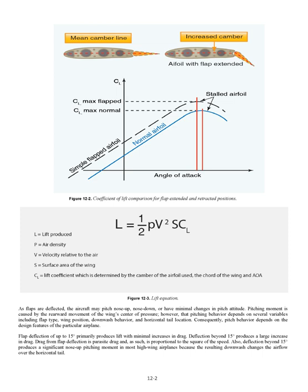Flap deflection of up to 15 degrees primarily produces lift with minimal increases in drag. Deflection beyond 15 degrees produces a large increase in drag. Drag from flap deflection is parasite drag and, as such, is proportional to the square of the speed. Also, deflection beyond 15 degrees produces a significant nose-up pitching moment in most high-wing airplanes because the resulting downwash changes the airflow over the horizontal tail.